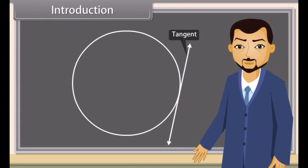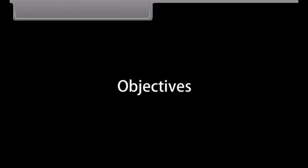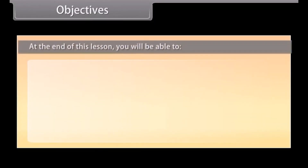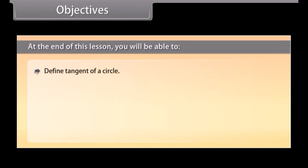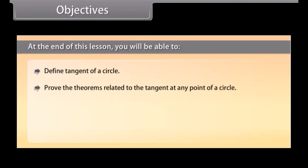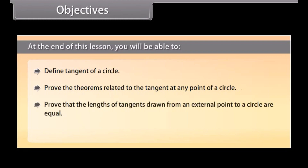Today we will study about circles and tangents. Objectives: At the end of this lesson you will be able to define tangent of a circle, prove the theorems related to the tangent at any point of a circle, prove that the lengths of tangents drawn from an external point to a circle are equal, and solve examples related to the tangent of a circle.